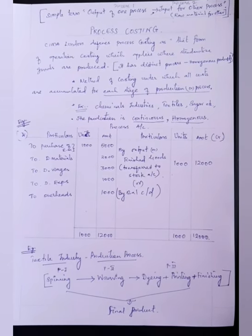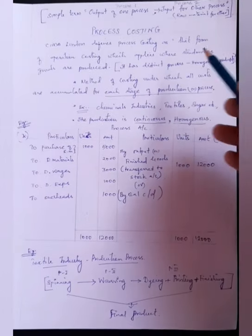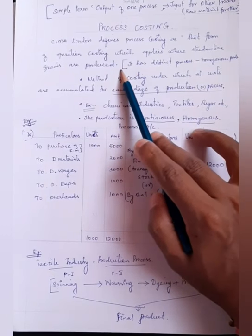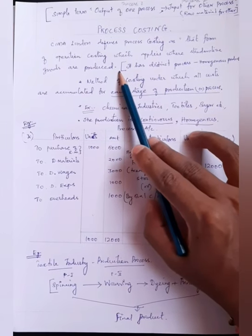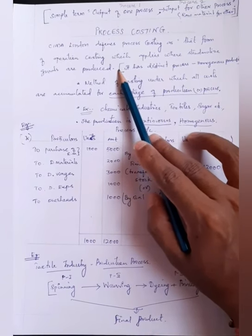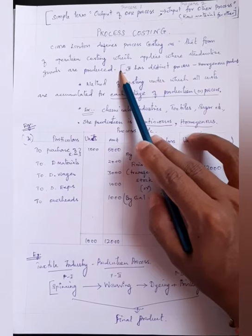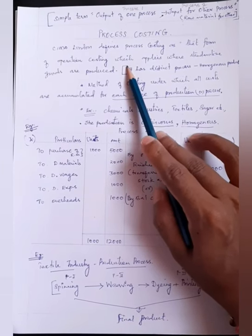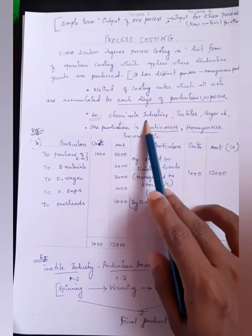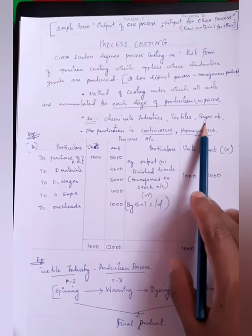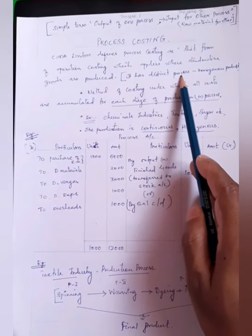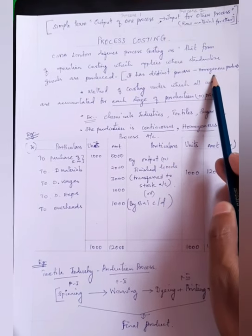CIMA London defines process costing as the form of operation costing which applies where standardized goods are produced. We already know that costing is a technique or a method used to ascertain the cost of a product. Process costing is mainly used by industries such as chemical industries, textile industries, and sugar manufacturing industries, where the production has different distinct processes which produce a homogeneous product.